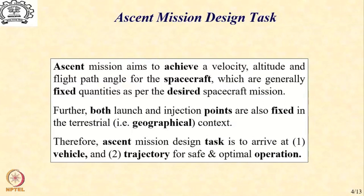This brings us to the fundamental requirement on the ascent mission as two tasks. The first one is to arrive at a vehicle which will achieve the objective, and the second is a trajectory or flight path that the vehicle should take resulting in safe and optimal operation. Our ascent mission analysis and design will involve these two tasks — the vehicle itself and the trajectory — and both must be addressed before we can say we have an ascent mission achieving the objective of a space mission.